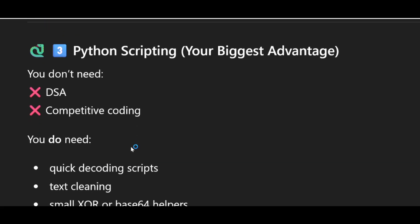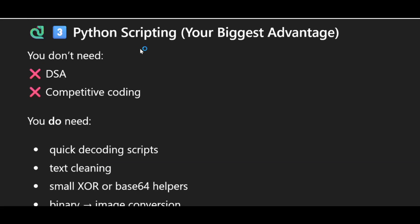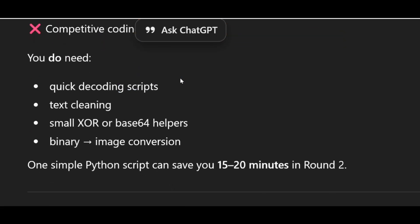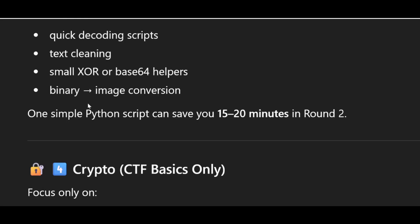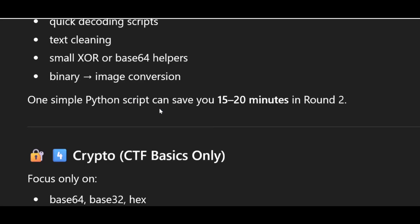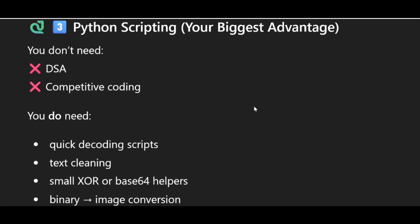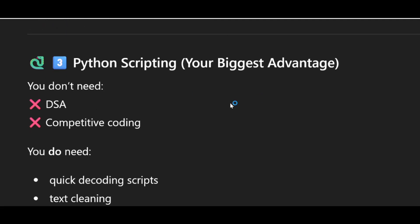Next, Python scripting — your biggest advantage. You don't need DSA or competitive coding here. You just need quick decoding scripts, text cleaning, and small XOR or Base64 helpers. You must also know binary-to-image conversion. One simple Python script can save 15 to 20 minutes in round 2, so make sure you are learning Python scripting.